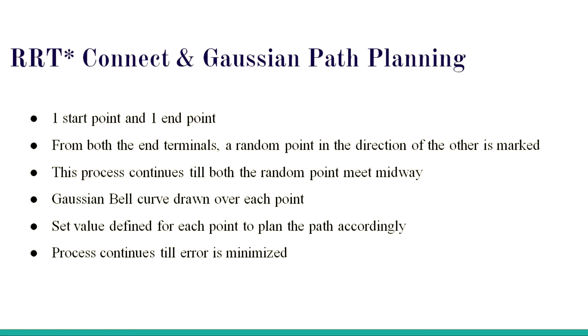RRT star connect algorithm is used for path planning. Before RRT star, I will tell you what RRT is. RRT is rapidly recursive trees, which is used for path planning. In plain RRT, it gets the start point and the end point. From the start point, it randomly selects one point and joins the line with that point. From that new point, it again selects one random point. This process continues till we reach the end point. In this process, error can be maximum because there is no fixed algorithm in which the point should move.